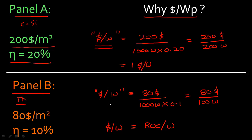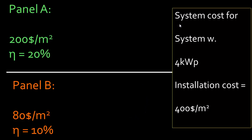This is a common metric where I can compare these two different panels. But keep in mind I've calculated this number only for the cost of the panel. Looking at just the module price, panel B, which uses thin film technology, is actually looking quite good because it has a lower dollar per watt number. But these things can quickly change if you consider the whole system cost, as I'll illustrate now.